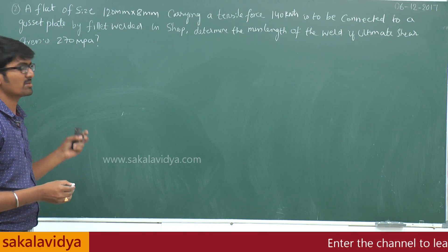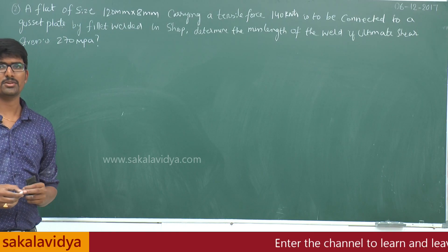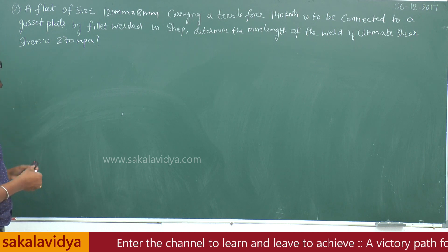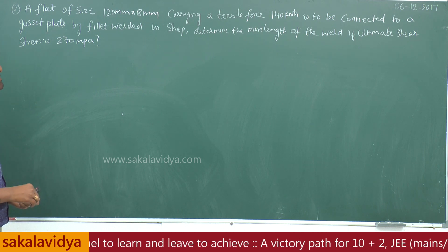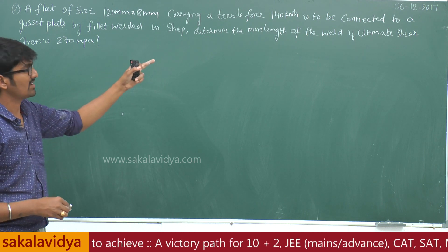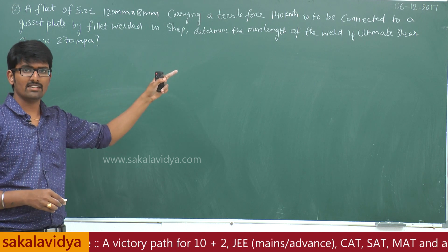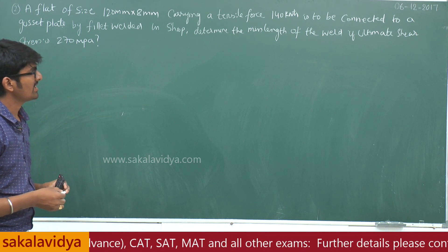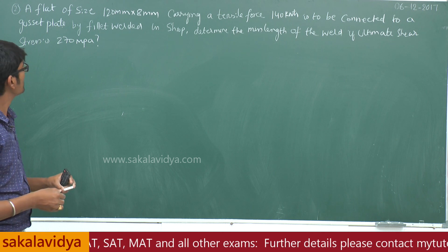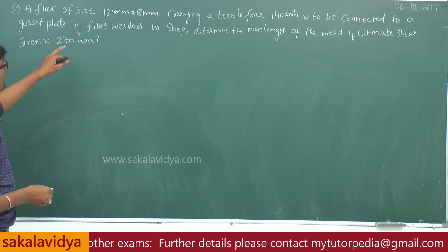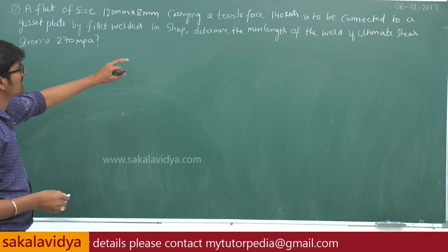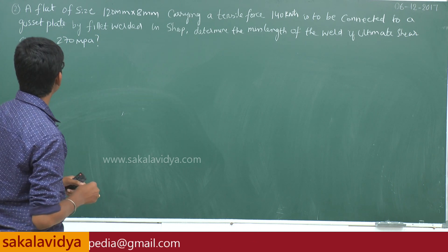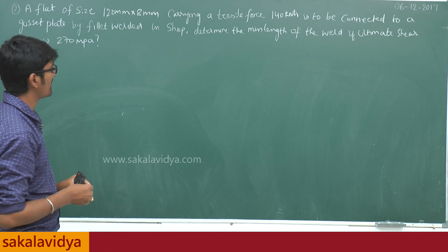Example number 2, based upon a flat connected to a gusset plate. The flat is of size 120 x 80 mm carrying a tensile force. The tensile force is 140 kN, and it is to be connected to a gusset plate by fillet weld in the shop. Determine the minimum length of the weld. The ultimate shear stress is 270 MPa.